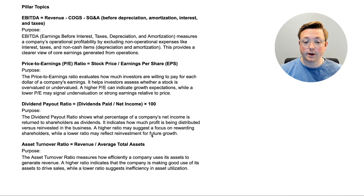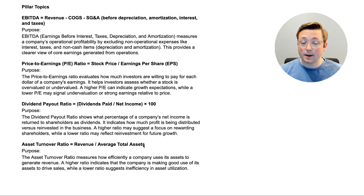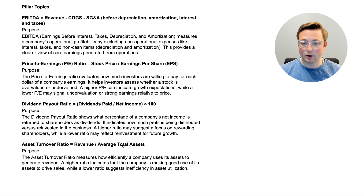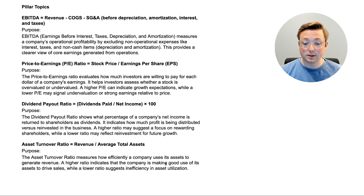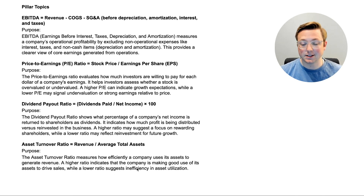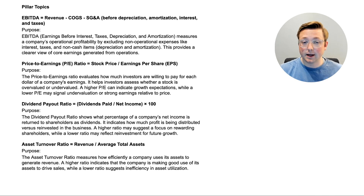Finally, the asset turnover ratio: revenue divided by average total assets. This is not the same as return on assets, which is net income divided by average total assets. The asset turnover ratio measures how efficiently a company uses its assets to generate revenue specifically, not net income. A higher ratio indicates the company is making good use of assets to drive sales, while a lower ratio suggests inefficiency in asset utilization. Those are the four performance metrics on the FAR CPA exam blueprint.